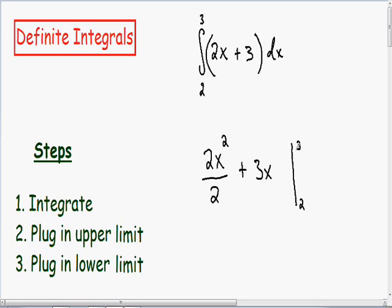We're going to have to plug this upper limit and lower limit into our x. But before we do that, I'm going to simplify this a little further. Notice in our first term how our 2's cancel, and the only thing we're left with is x squared. Our 3x stays the same, and our upper and lower limit also stay the same.